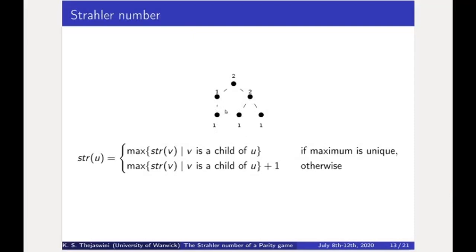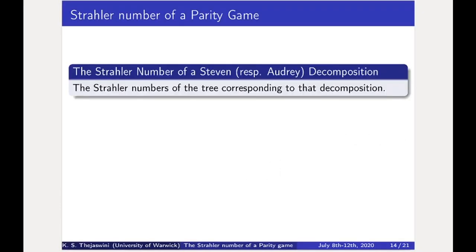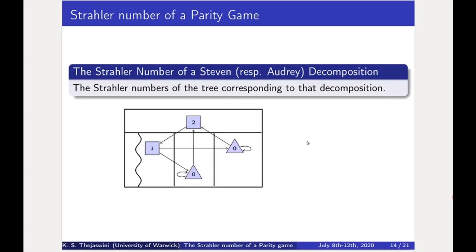More formally, for a node in a tree with several children, the Strahler number is the maximum of its children's Strahler numbers if that maximum is unique. If not, it is one larger than the maximum of its children's Strahler numbers. Given a decomposition, there is a tree associated to it, so we define the Strahler number of a decomposition as the Strahler number of the tree associated to the decomposition. In this example, the Strahler number of this even graph equals the Strahler number of its decomposition tree, which is just 2.